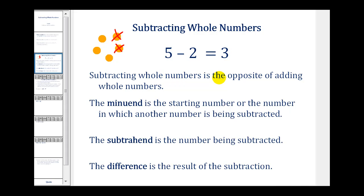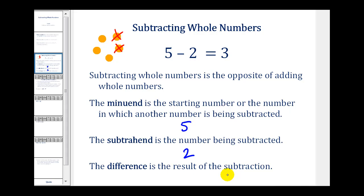Subtracting whole numbers is the opposite of adding whole numbers. The minuend is the starting number, or the number from which another number is being subtracted — in this case, the minuend is five. The subtrahend is the number being subtracted, so the subtrahend is two. And the difference is the result or the answer of the subtraction, so our difference is three.